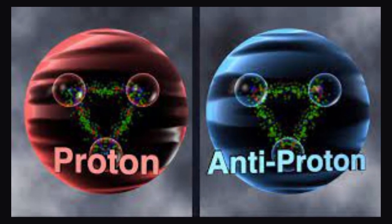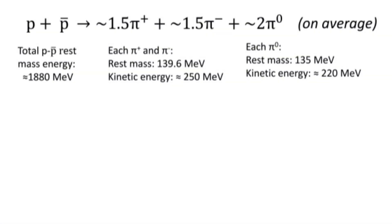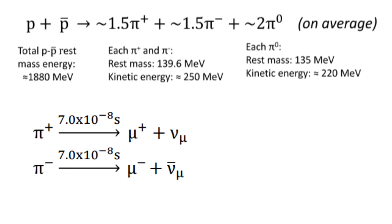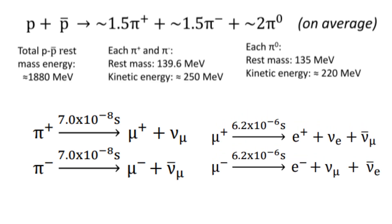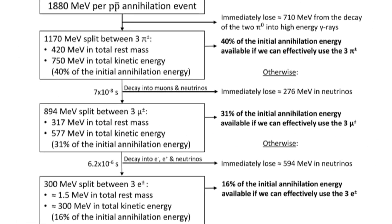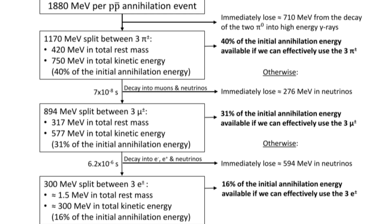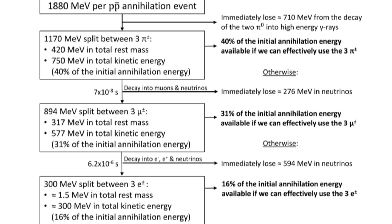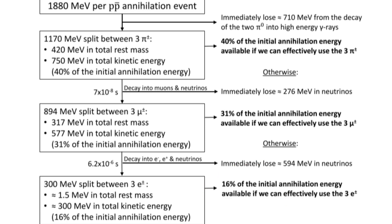Let's look at the matter-antimatter reaction between a proton and an antiproton. When they annihilate, they form three charged pions and two neutral pions. These charged pions undergo decay and produce charged muons, which further decay into positrons and electrons. Those electrons and positrons may annihilate and release high-energy gamma radiation. 40% of the initial annihilation energy is available using the three pions, 31% using the muons, or only 16% using the electrons and positrons.